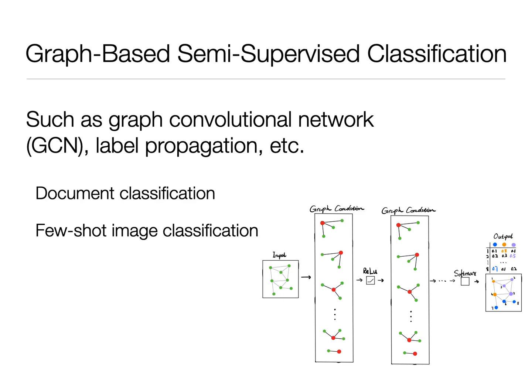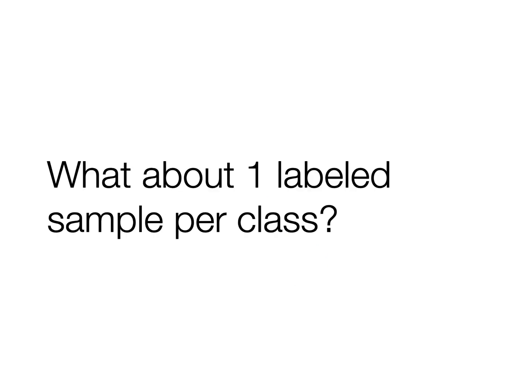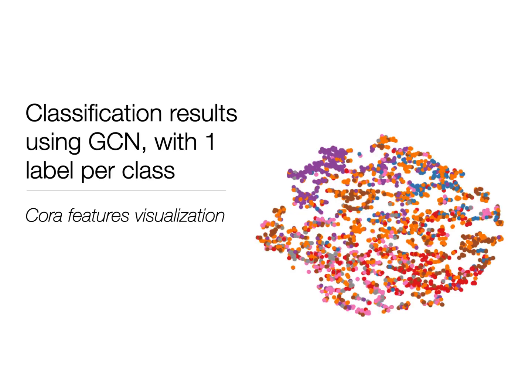Graph-based semi-supervised learning has been shown to be very effective, such as graph convolutional network and label propagation. When we use GCN to learn the feature embeddings of Quora with 20 labels per class, it works pretty well. But what if we only have one label sample per class? It does not work, apparently.